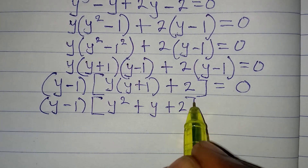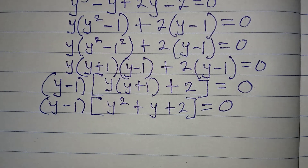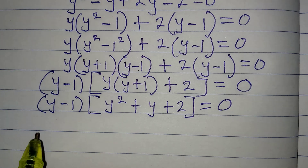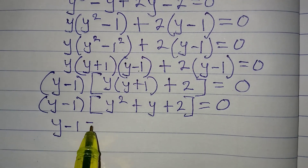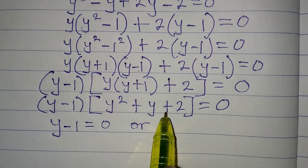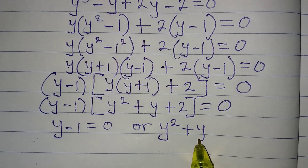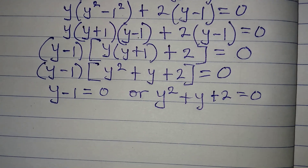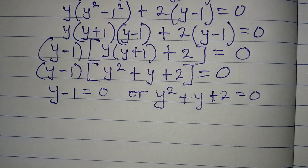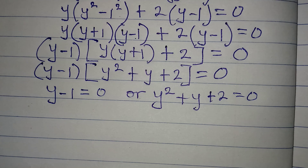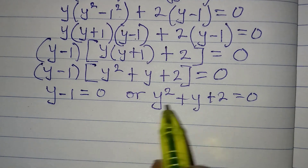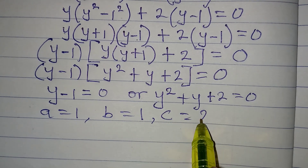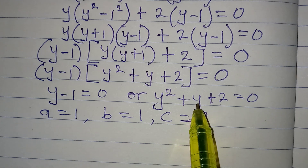Remember, we are only considering the real solution. Applying the zero product rule, it is either y − 1 = 0, or y² + y + 2 = 0. For the quadratic, our coefficients are a = 1, b = 1, and c = 2.